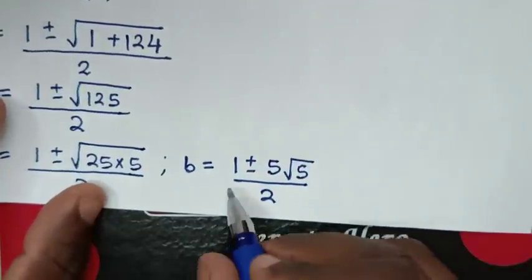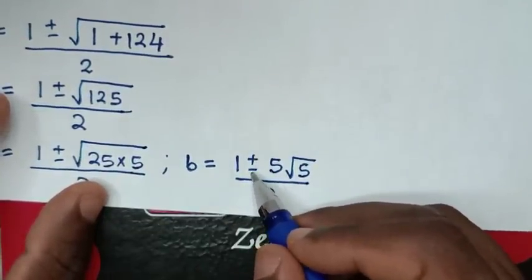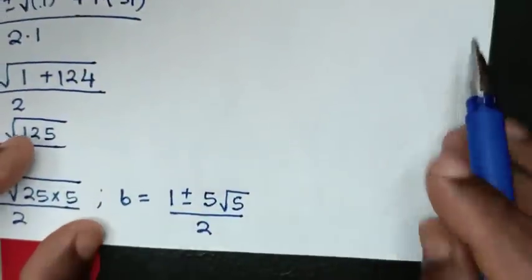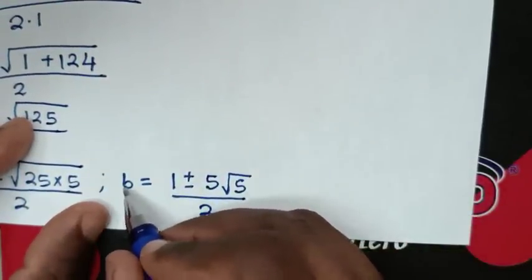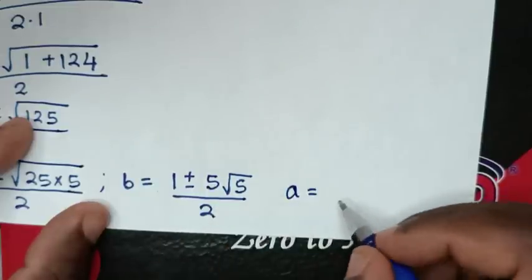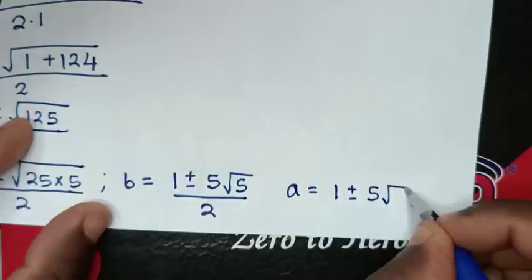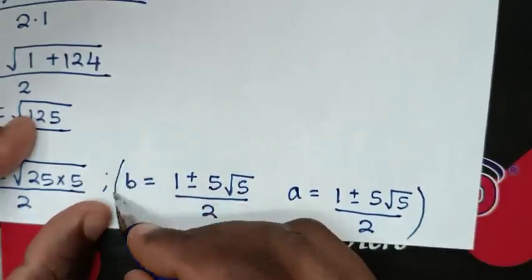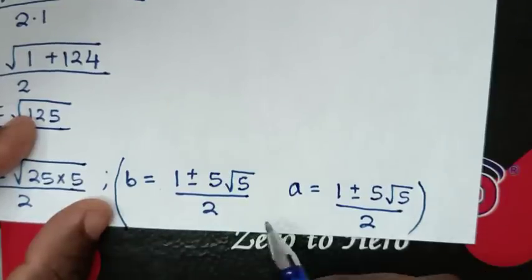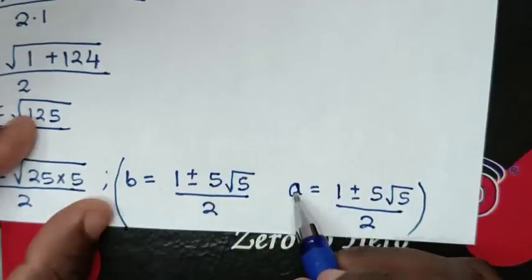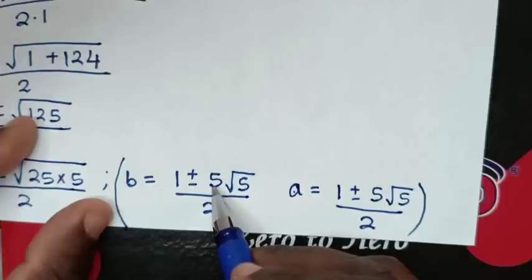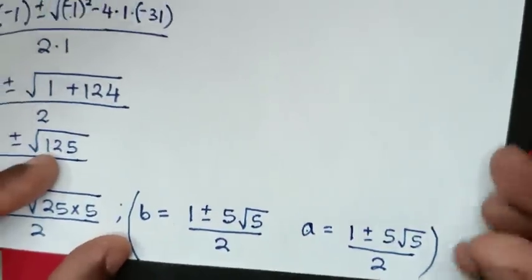From here we get two values of b: 1 plus 5 square root of 5 over 2, and 1 minus 5 square root of 5 over 2. Since from the first solution a equals b, the values of a are the same. So a comma b equals 1 plus 5 square root of 5 over 2, comma, 1 plus 5 square root of 5 over 2.